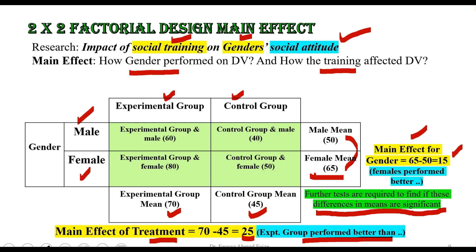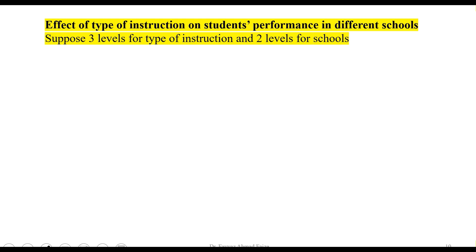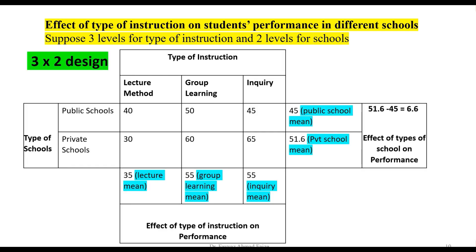Now let us look at another factorial design. The topic is the effect of type of instruction on student performance in different schools. We choose three levels for type of instruction and two types of schools, making this a 3×2 factorial design.